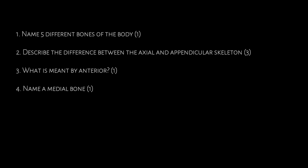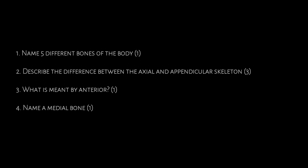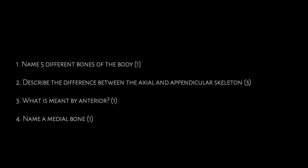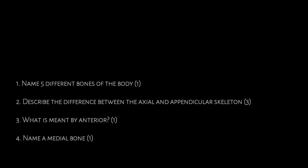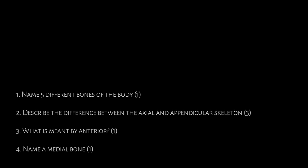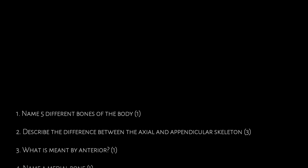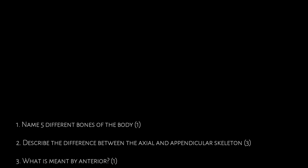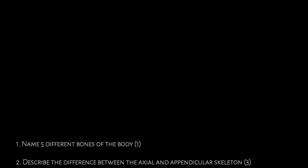Let's have a look at those answers. For any five bones, any from your revision guide would be acceptable. For question two, the axial skeleton is the main core of the body, whereas the appendicular skeleton is all the other bones that attach to the axial skeleton — one's attached, one's in the middle. Anterior means the front of the body. And a medial bone is any bone in the centre, such as the sternum or the vertebrae, which are dead in the middle of your body. Thank you for listening to this podcast — coming up next is more about the skeletal system.